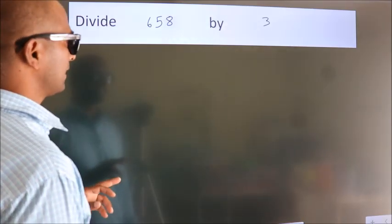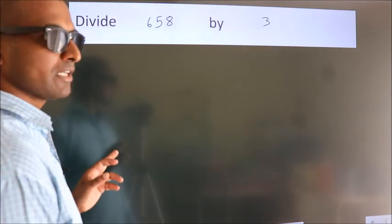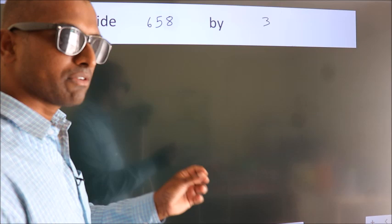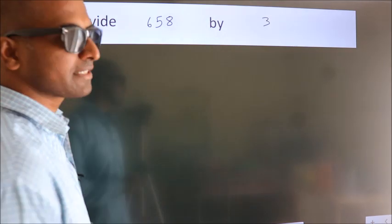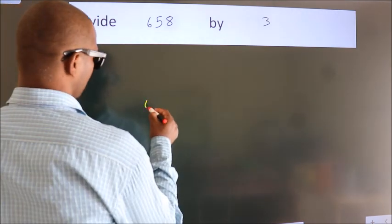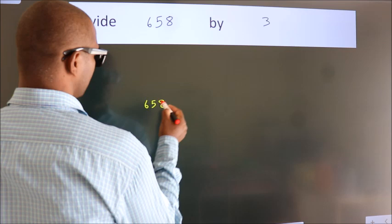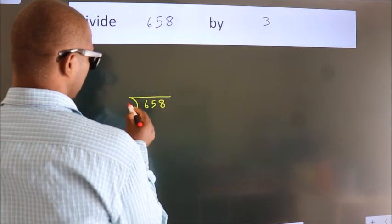Divide 658 by 3. To do this division, we should frame it in this way. 658 here, 3 here.